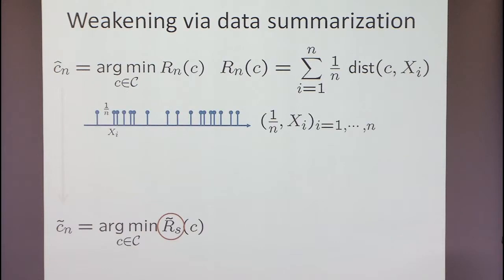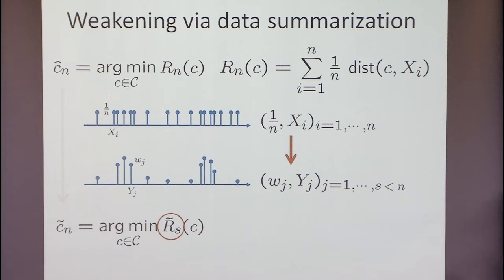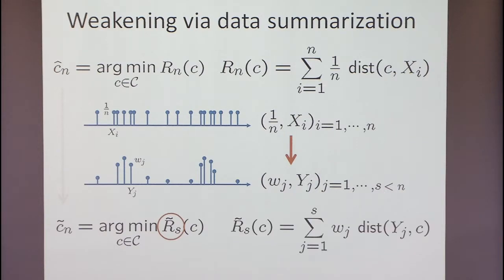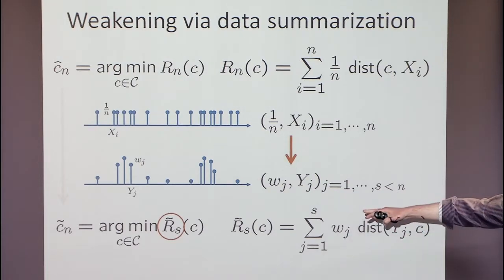So how are we going to do this approximation? This function we're trying to approximate is the empirical measure — each sample point is associated with a weight of 1/n. What we're going to do — when I say summarize the data — is throw away some of these points and assign different weights to the remaining points. We replace the empirical distribution by some other empirical distribution effectively, with different weights other than 1/n and with fewer points, and replace the objective function by the very similar looking function evaluated at these new points.